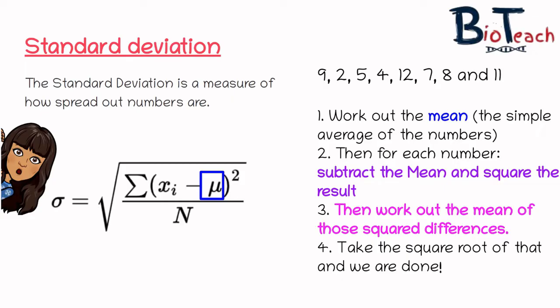Then for each of the numbers you've got to subtract the mean and square the result, which gives you the middle part of that equation. After that you can work out the mean of those squared differences and then take the square root of that, and then you're done.